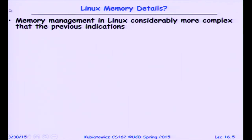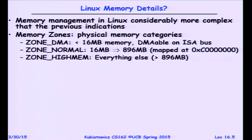Before we totally leave memory, I want to say a little about memory management in a real operating system like Linux. Linux was designed for several different versions of the x86, so memory management gets more complicated. There are three different zones: the DMA zone, which is less than the first 16 megabytes of memory; the normal zone, from 16 megabytes to 896 megabytes; and the high memory zone, which is everything else. I'm talking about physical memory in DRAM — this is the first 16 megabytes of DRAM, then another chunk, then another chunk.